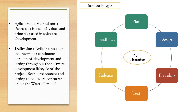Agile is not a method nor a process. It is a set of values and principles used in software development. Agile is a practice that promotes continuous iteration of development and testing throughout the software development life cycle. Both development and testing activities are concurrent, unlike the Waterfall method. As you can see in the diagram, one feature is planned, designed, built, tested, then released and feedback is collected from the client. This cycle or iteration repeats for the next feature and continues till the end of the project.